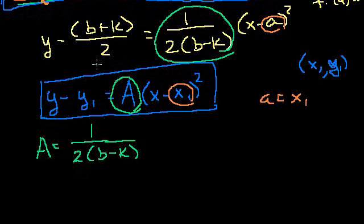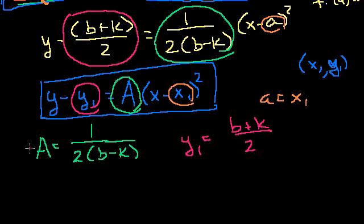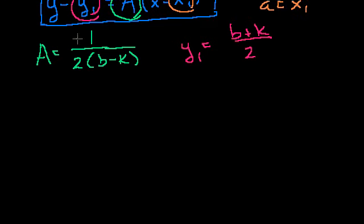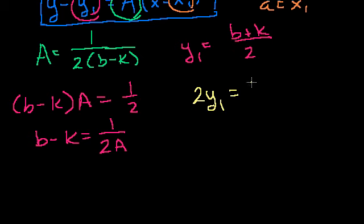We can also pattern match that the scaling factor A equals 1 over (2b minus k), and y1 equals (b plus k)/2. Now we have two equations with two unknowns. Multiplying the first equation through by (b minus k), we get A(b minus k) equals 1/2, so b minus k equals 1 over (2A).